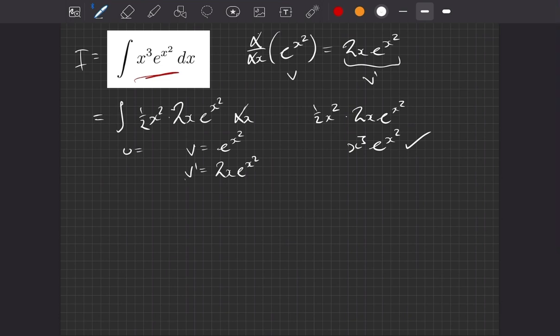Our u is going to be half x squared, and therefore our u dash, if we bring the 2 down, times it by the half, we get 1. Lower the power, we have just x left over.